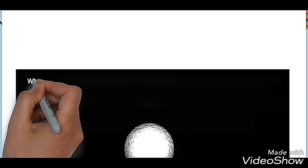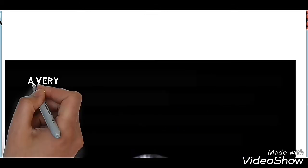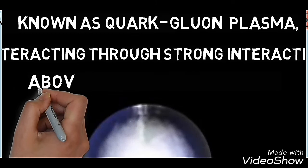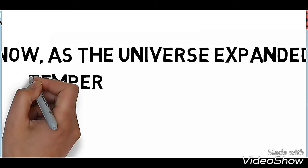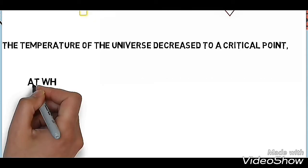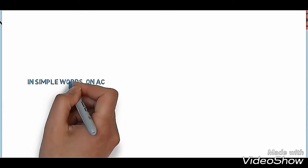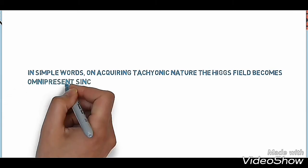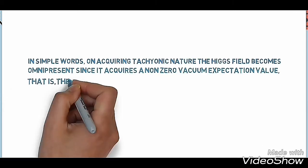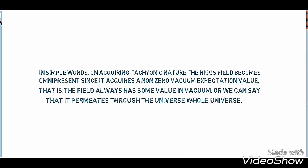This story goes back to the time of the electroweak epoch when the temperature of the universe was extremely high and the universe was massless. As the universe expanded, the temperature decreased to a critical point at which the Higgs field acquired dichonic nature. Now what does that mean? In simple words, on acquiring dichonic nature, the Higgs field became omnipresent since it acquires a non-zero vacuum expectation value, i.e., the field always has some value in vacuum.